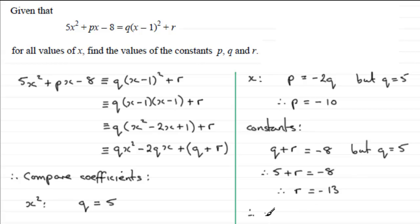So there's our three values. I'm going to just summarize at the end: we've got therefore p is -10, q is 5, and r equals -13.